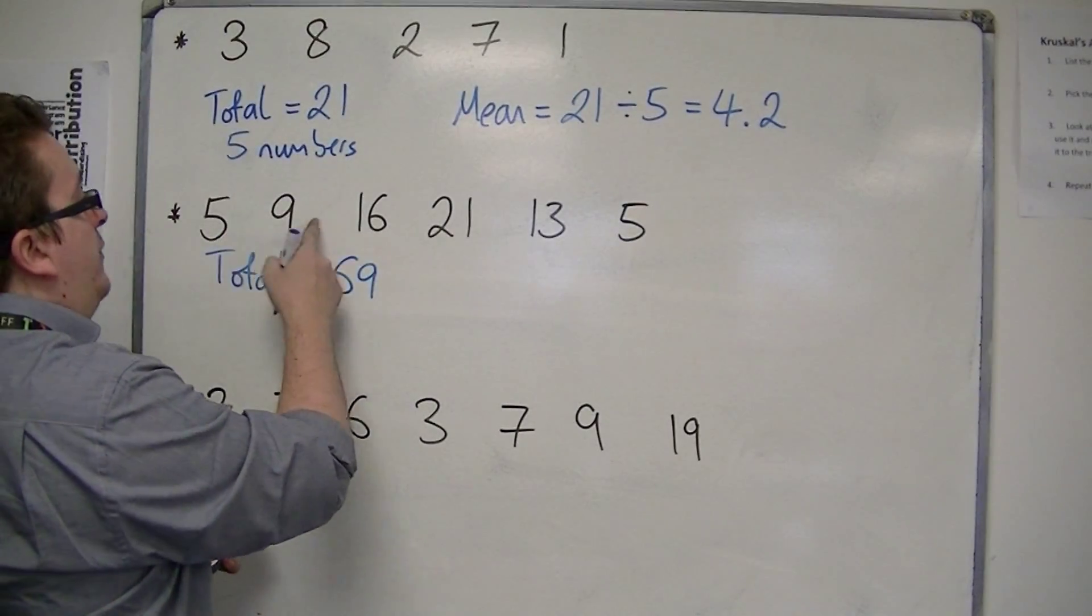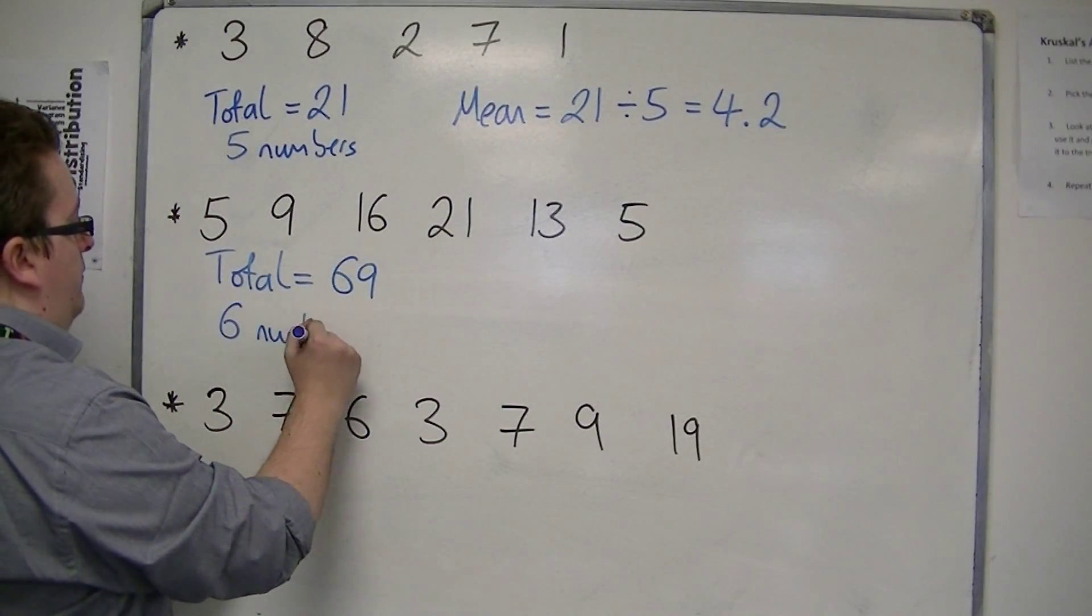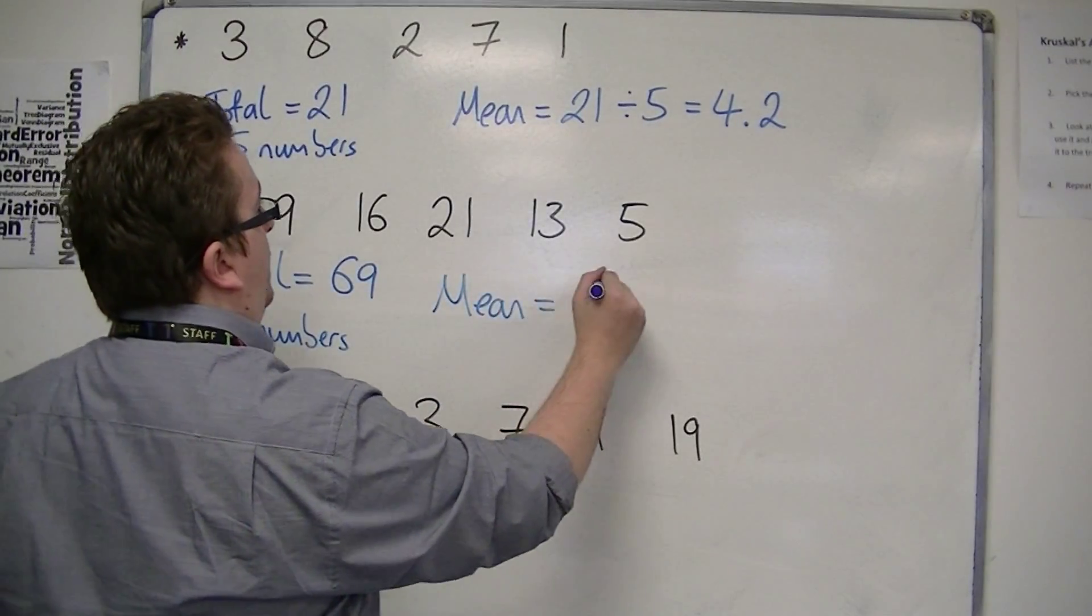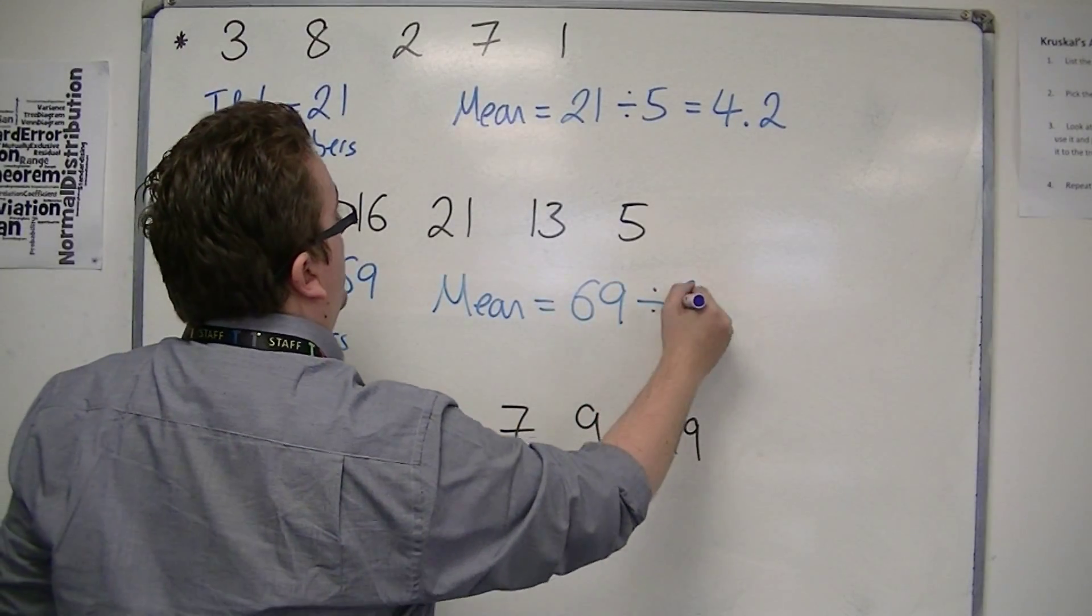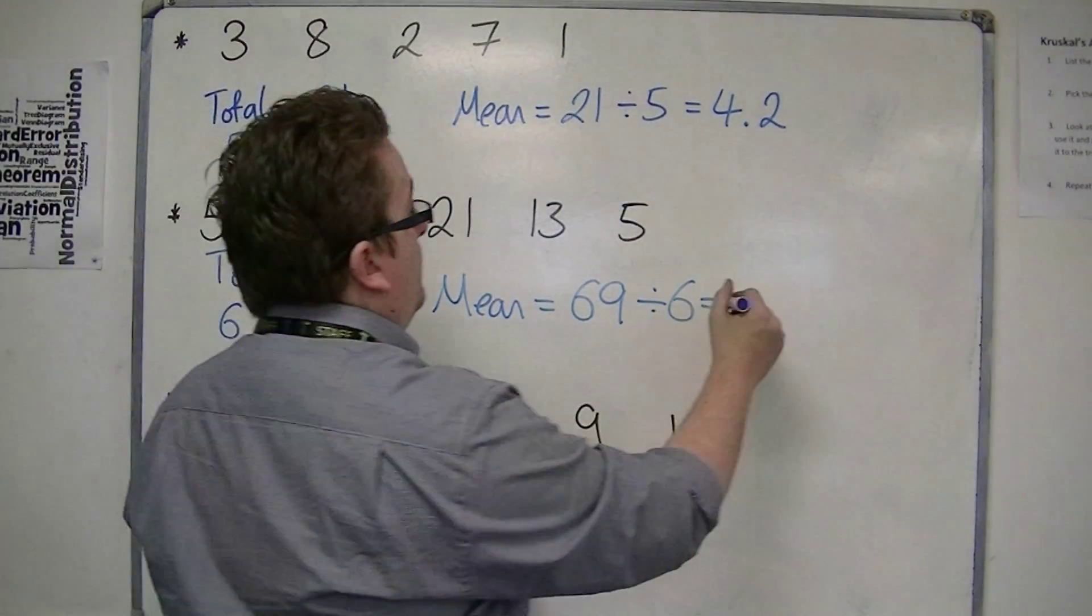And this time we've got 1, 2, 3, 4, 5, 6 numbers. So the mean is 69 divided by 6, which is 11.5.